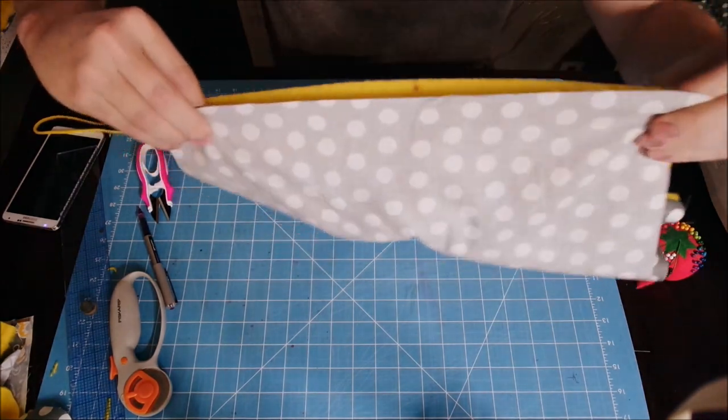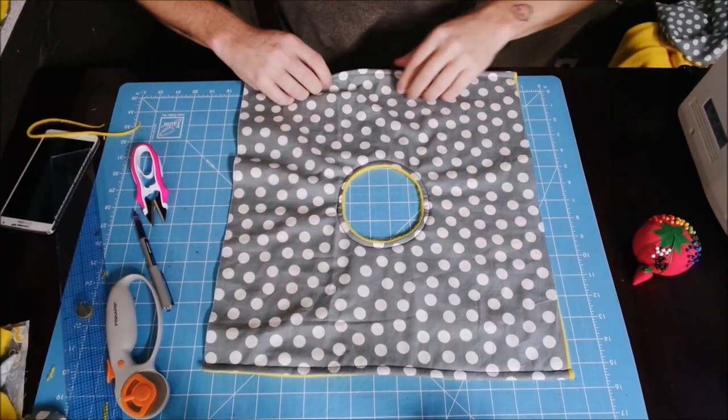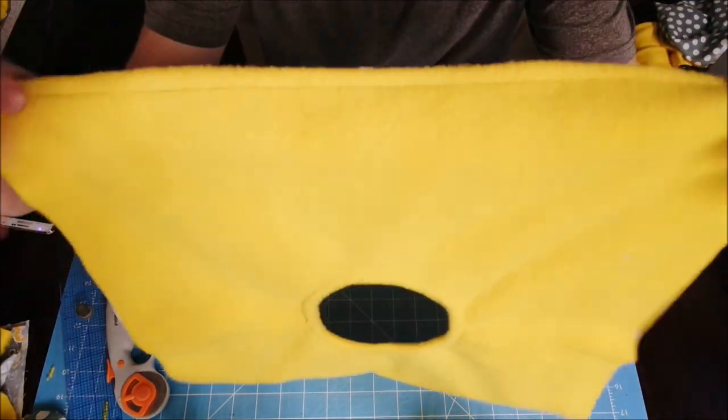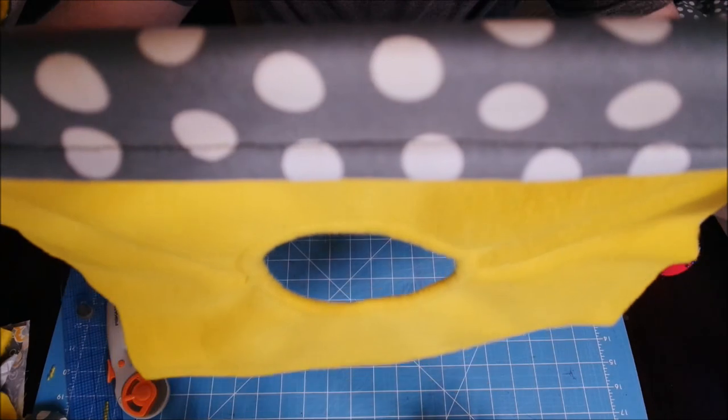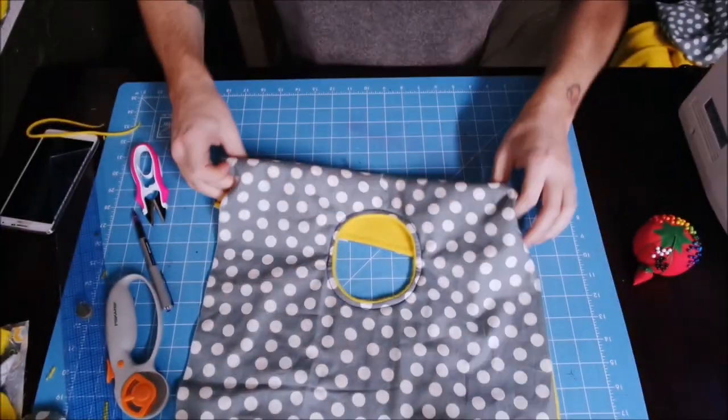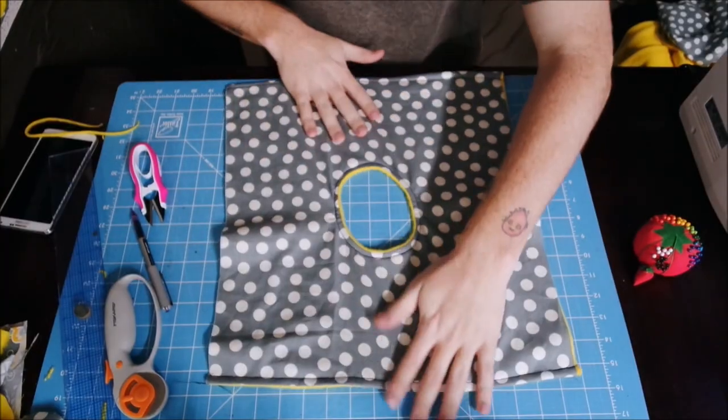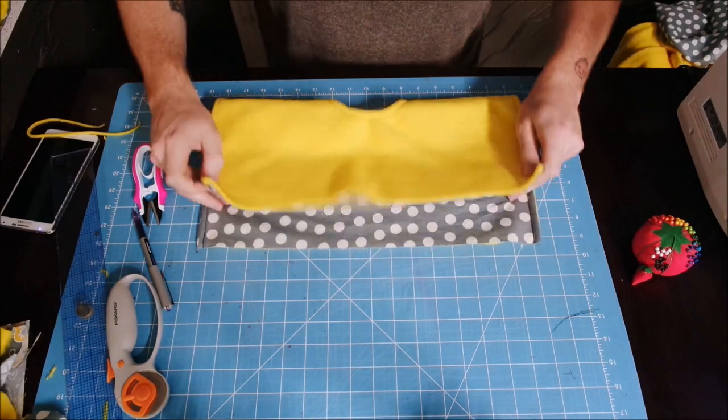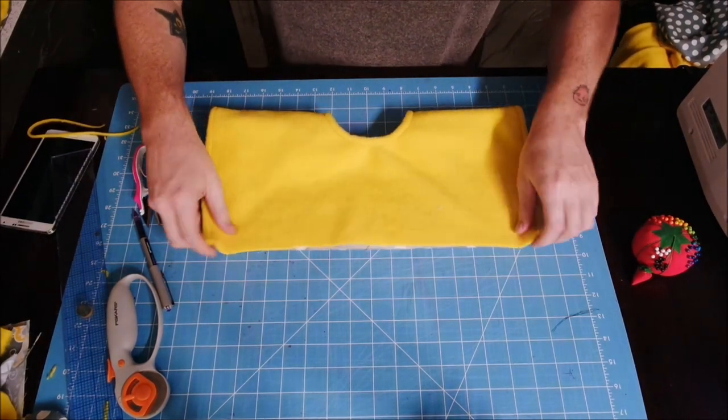Okay, so now I sewed both sides and I put my line along there. I don't know if that'll focus, but you can see, and I did that on this side too. And now we're going to take it like this and put our good sides together.